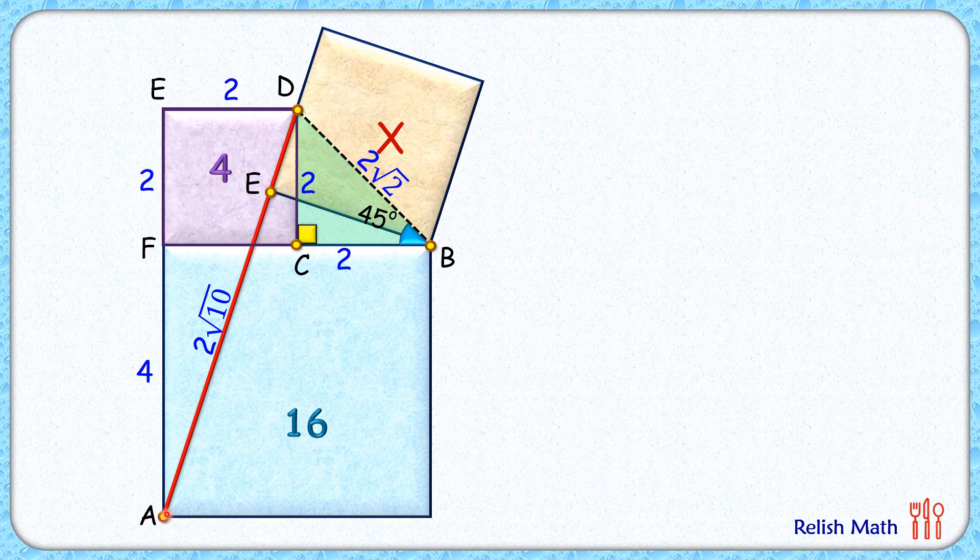Now let's join AB, the diagonal of the blue square. So this diagonal length will be 4√2 centimeters, and we know that the diagonal and side make an angle of 45 degrees.